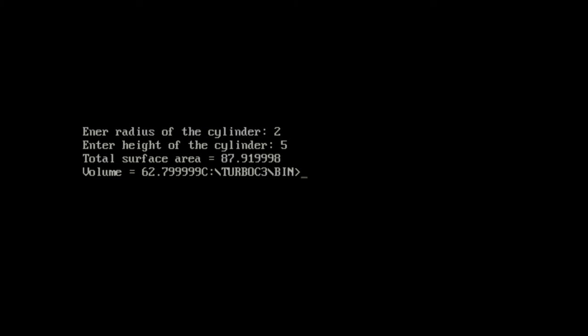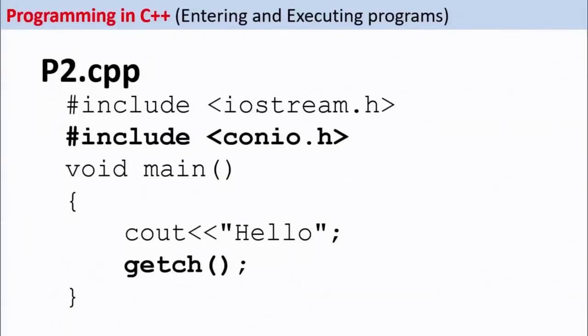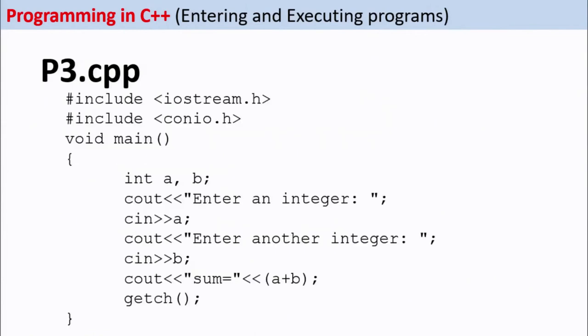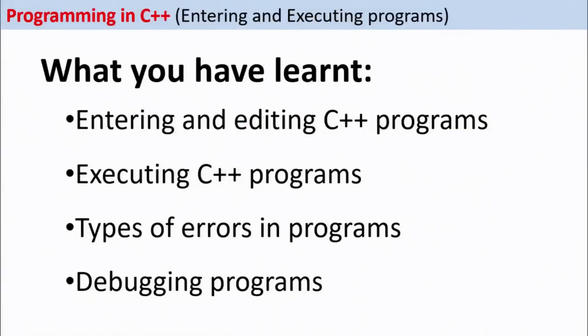So this is how practically we run programs using Turbo C++. In today's class we have seen how to enter and edit C++ programs, how to execute the programs, and what are the different types of errors — runtime errors, syntax errors, and logical errors. Errors in a program are known as bugs and the process of removing those errors is known as debugging. We have also seen how to use conio.h, getch, and clrscr. Thank you students — I hope this class was really useful for you.